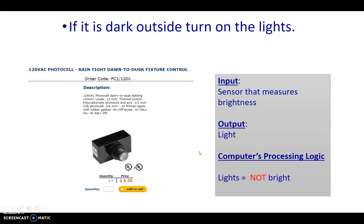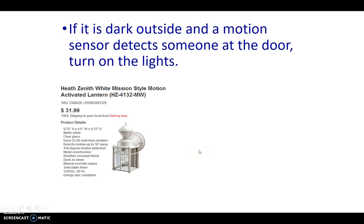Let's make this a lot more complicated. Here's an example of something else I could find on Ace Hardware. This particular kind of porch light or garage light basically turns on the light not only if it is dark outside, but also only if there is some sort of motion. So in plain English: if it is dark outside and a motion sensor detects someone at the door, turn on the lights.